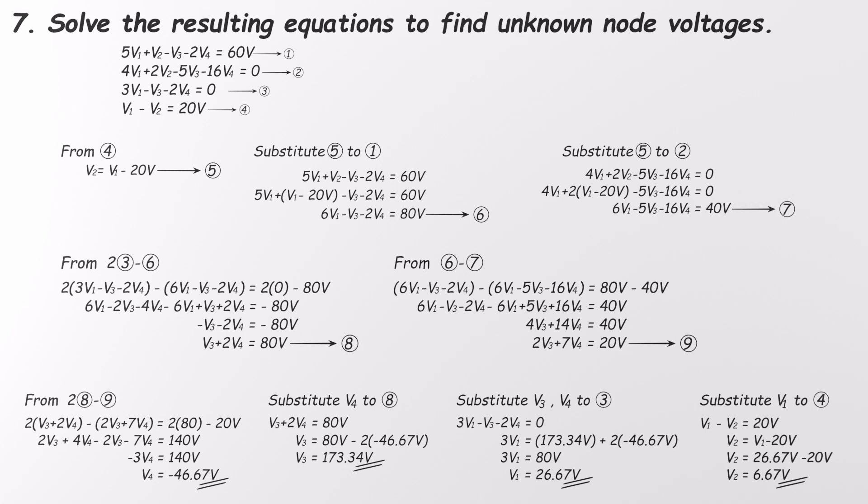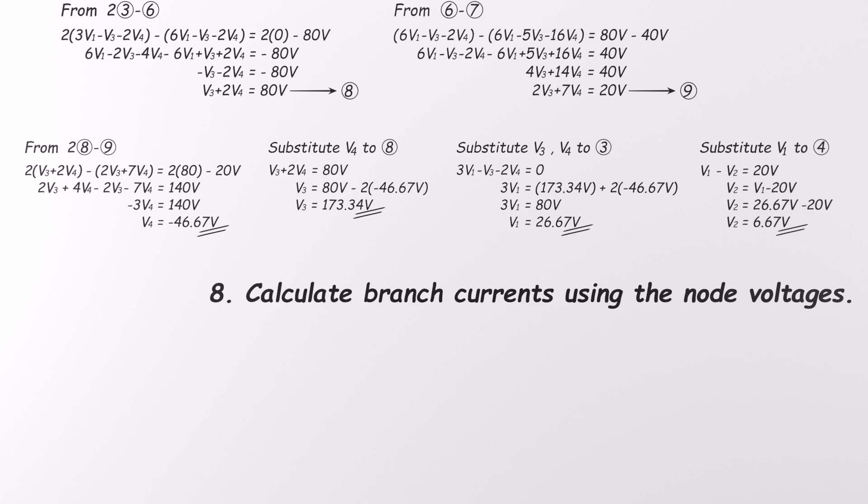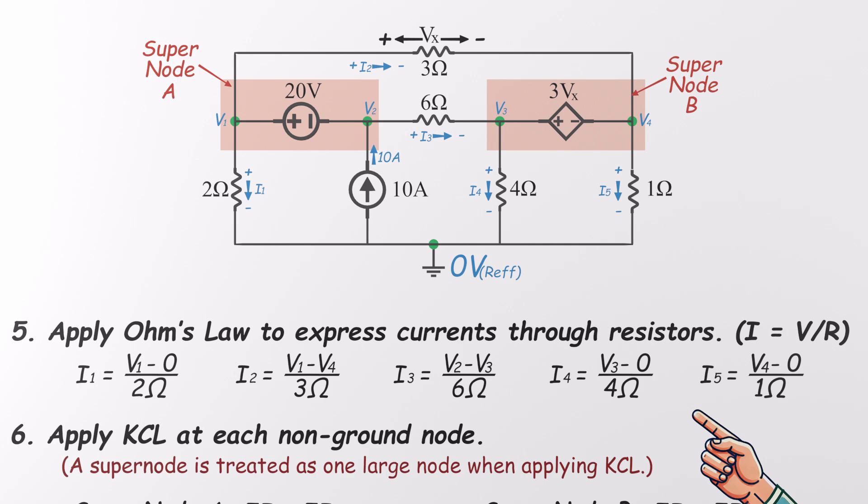It's a lot of algebra, but the trick is to focus on one variable at a time. Eliminate, substitute, and repeat until you've got everything. And if you're more comfortable with matrices, you can definitely use that method instead. Nice and clean, now we're ready to find the actual branch currents. With all the node voltages figured out, we just plug them into the current equations we set up earlier. Let's go.